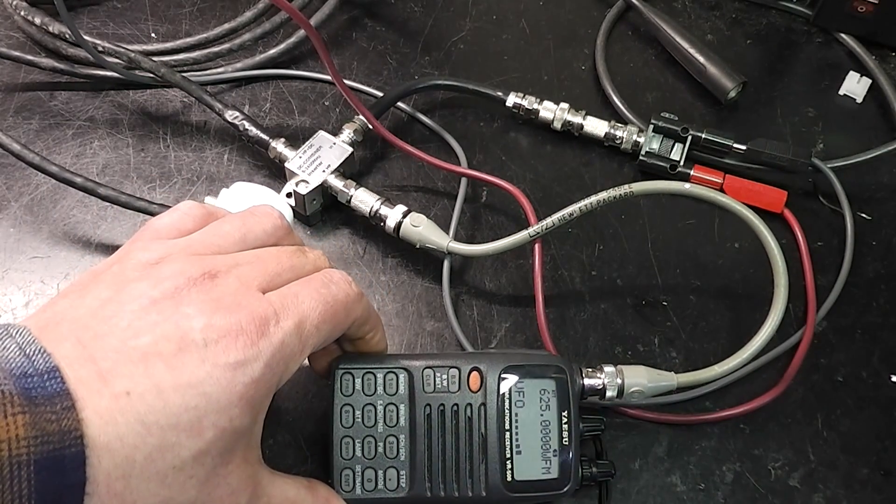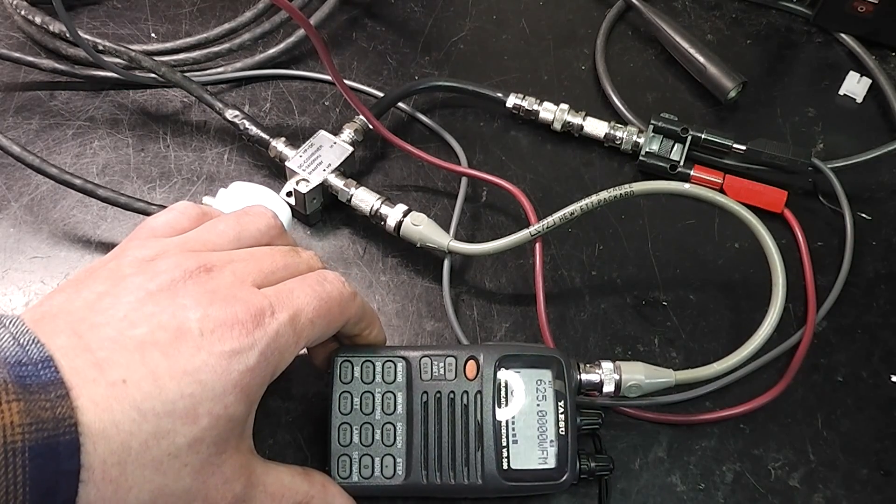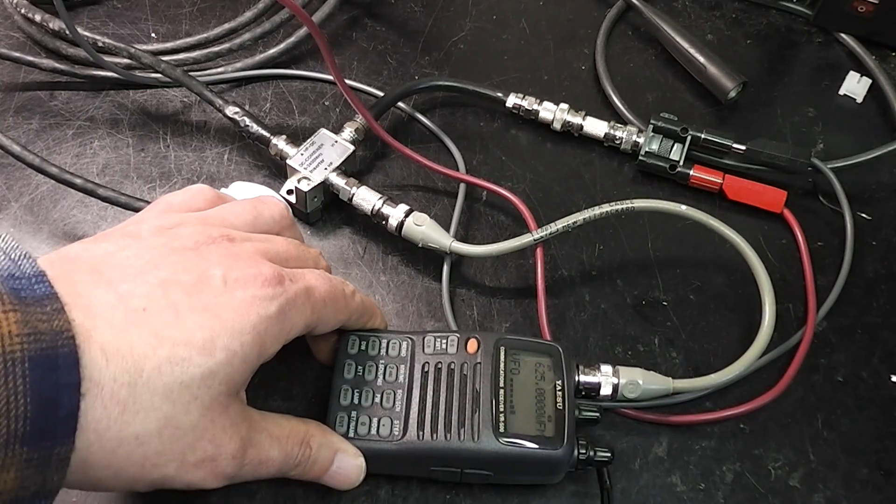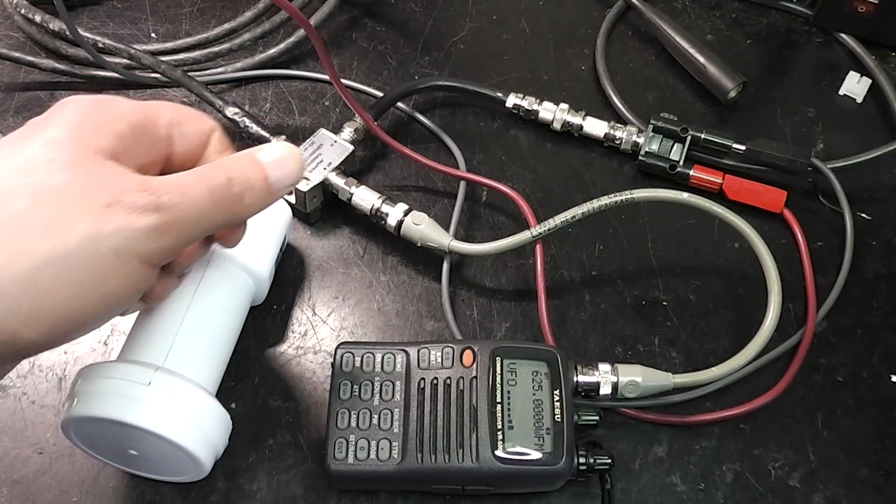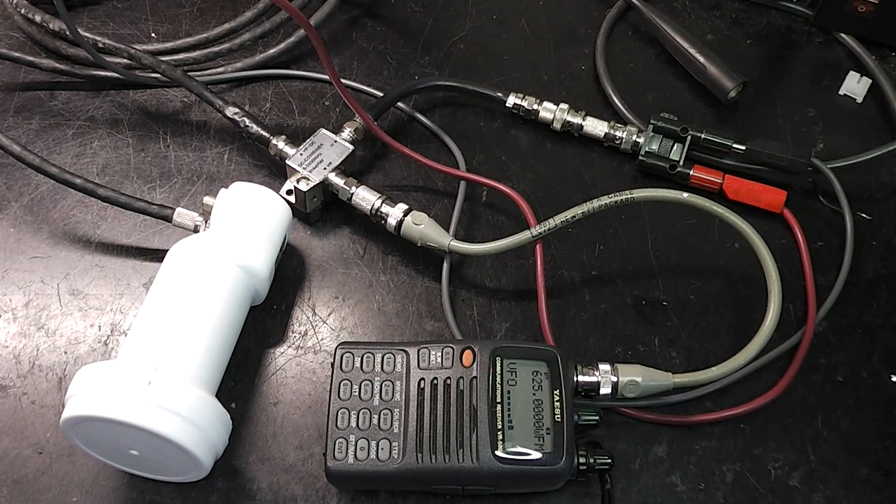This is a handheld scanner. It's currently tuned to 625 MHz, which is the frequency we end up with from my transmitter. That has wide band FM switchable on it so that it's compatible with what we're transmitting.